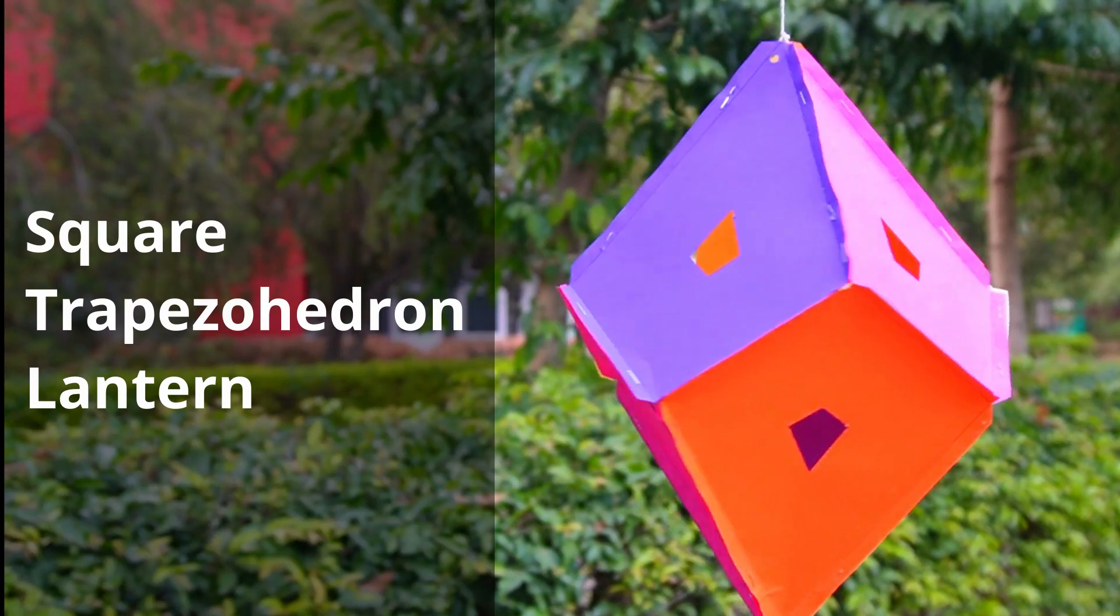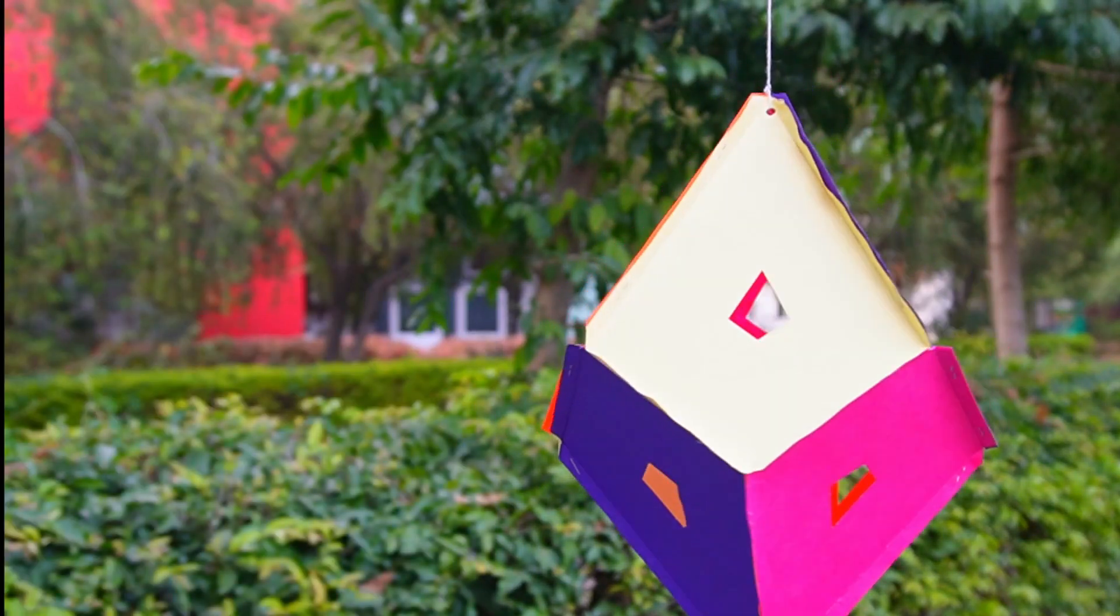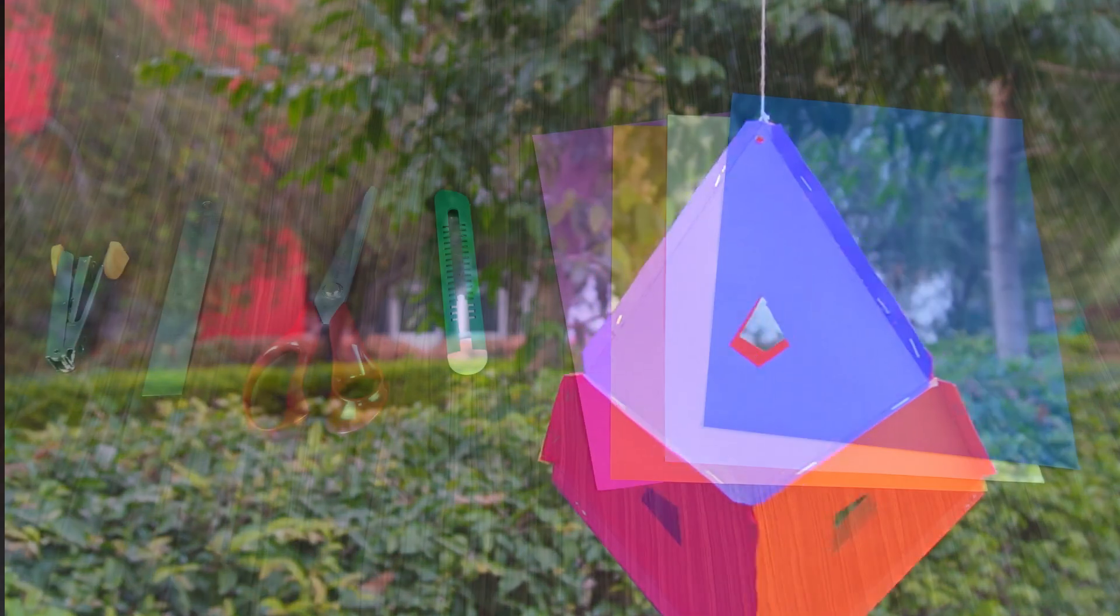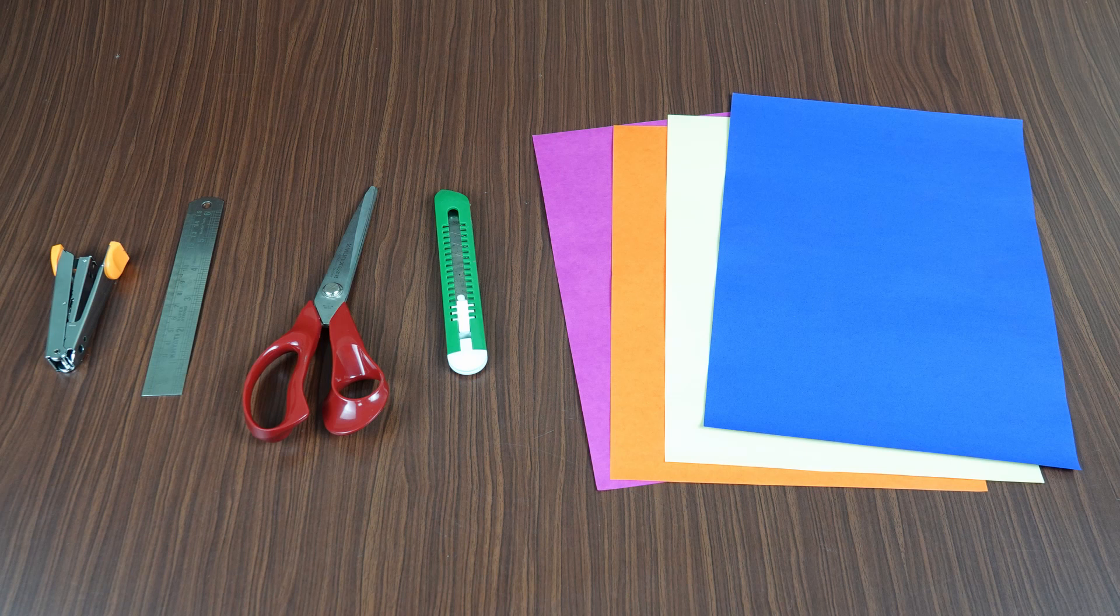Hello everyone, today we will make a beautiful square trapezohedron lantern. To get started, you will need some colorful paper, a cutter, a pair of scissors, a scale, and a stapler.